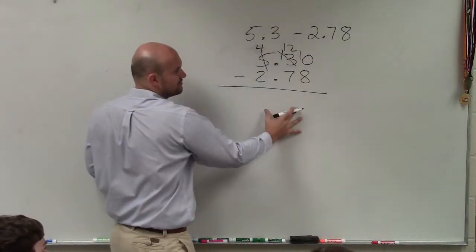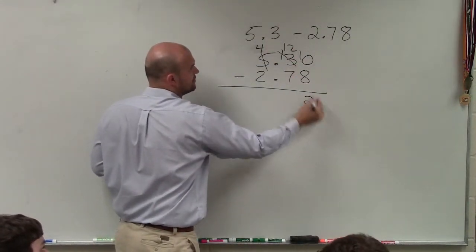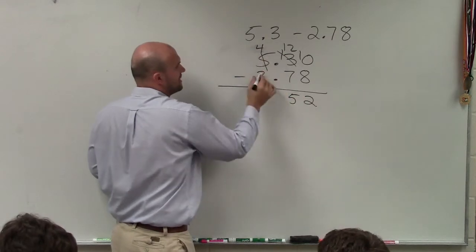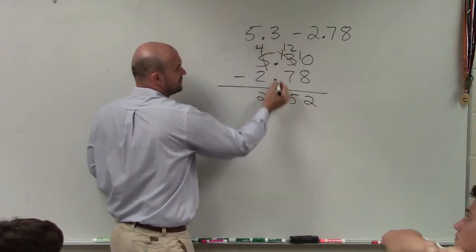Then, again, you just subtract vertically. 10 minus 8 is 2, 12 minus 7 is 5, 4 minus 2 is 2. Follow the decimal point.